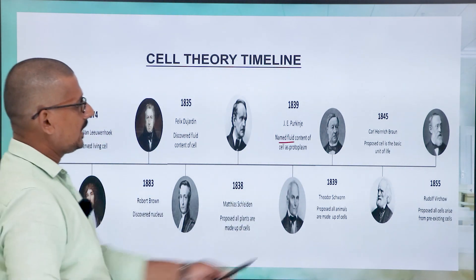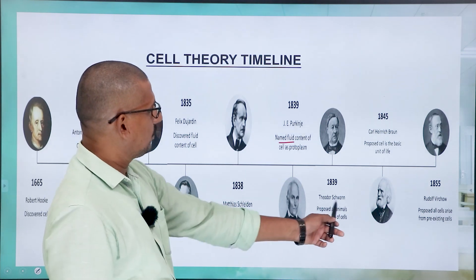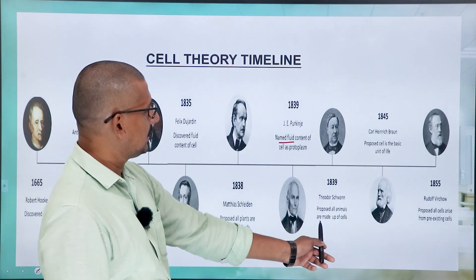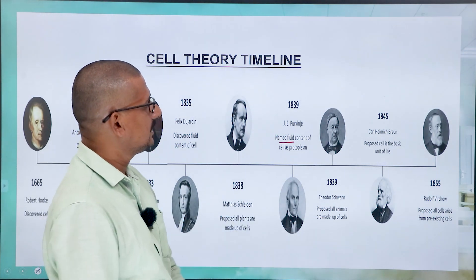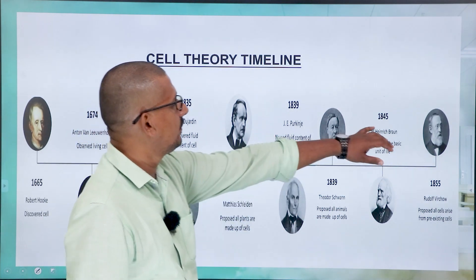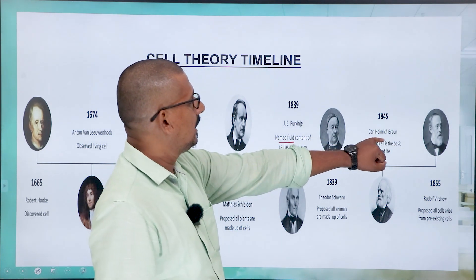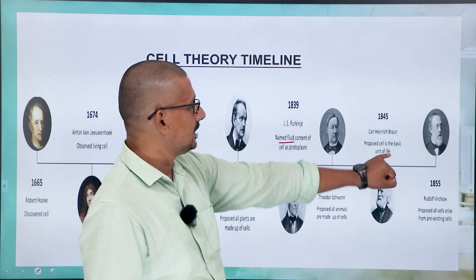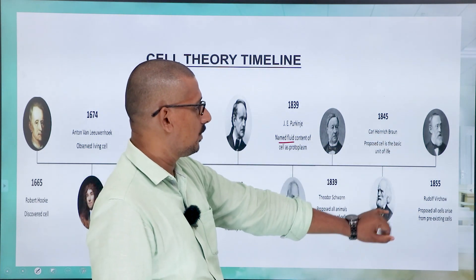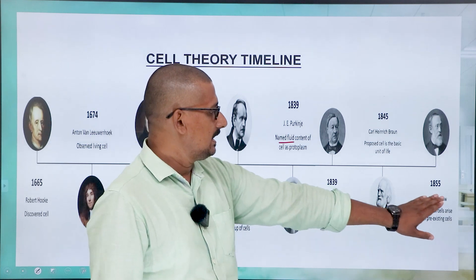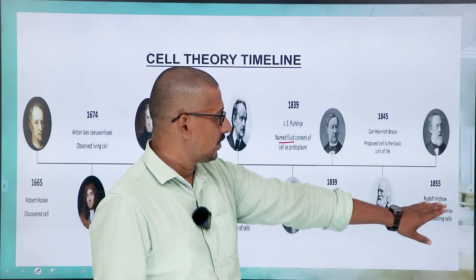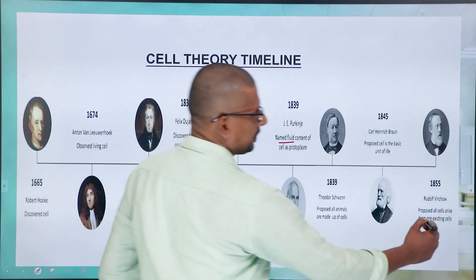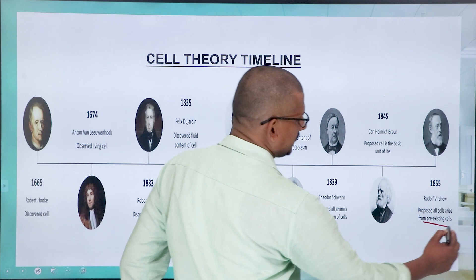Followed by 1839, Theodore Schwann proposed that all animals are made up of cells. And in 1845, Carl Heinrich Braun proposed that the cell is the basic unit of life. Then in 1855, Rudolf Virchow proposed that all cells arise from pre-existing cells.